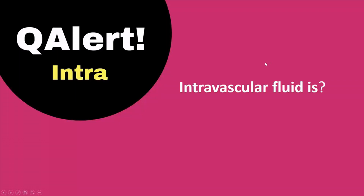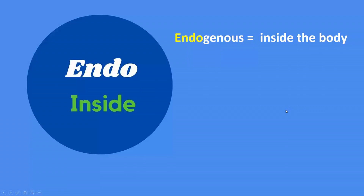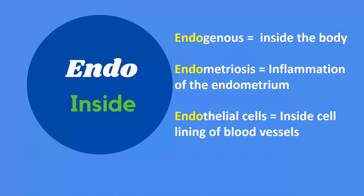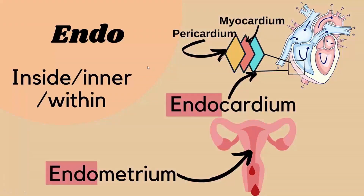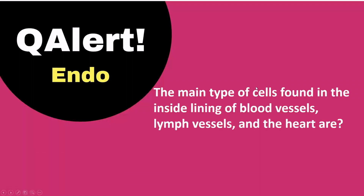Question alert for intra: intravascular fluid is the whole blood volume. Next, prefix endo means inside. Examples: endogenous means inside the body, endometriosis is inflammation of the endometrium, endothelial cells line the inside of blood vessels. Endometrium is the inner layer of the uterus. Endocardium is the inner layer of heart tissue. Question alert for endo: the main cells lining blood vessels, lymph vessels, and the heart are endothelial cells.